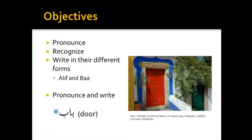We have four main objectives in this lesson. The first objective is to pronounce the alif and ba correctly. The second is to recognize the alif and ba when we see them in a word. The third is to write the different forms of the alif and ba, and there are four positions that we will be learning about for each letter of the Arabic alphabet. Our fourth objective is to write and pronounce the letters alif and ba in a word, and the word we have for this lesson is baab, meaning door.